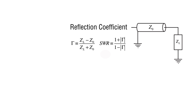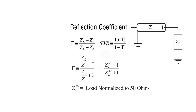The magnitude of gamma is between 0 and 1. The voltage standing wave ratio is then calculated from 1 plus the absolute magnitude of gamma, divided by 1 minus the absolute magnitude of gamma. We can rewrite the formula for gamma in terms of Z sub L divided by Z sub 0.